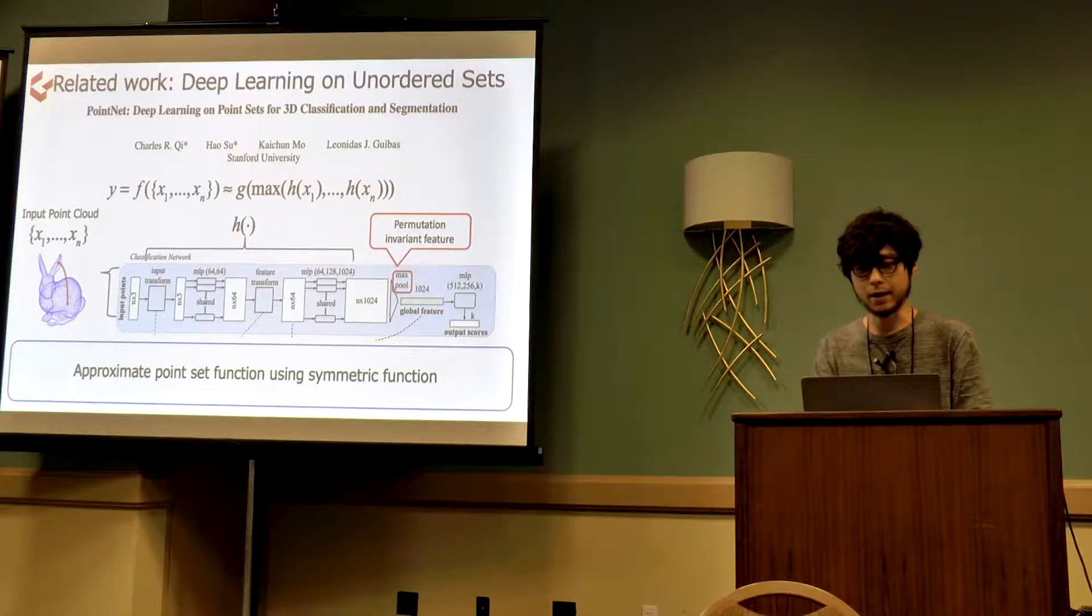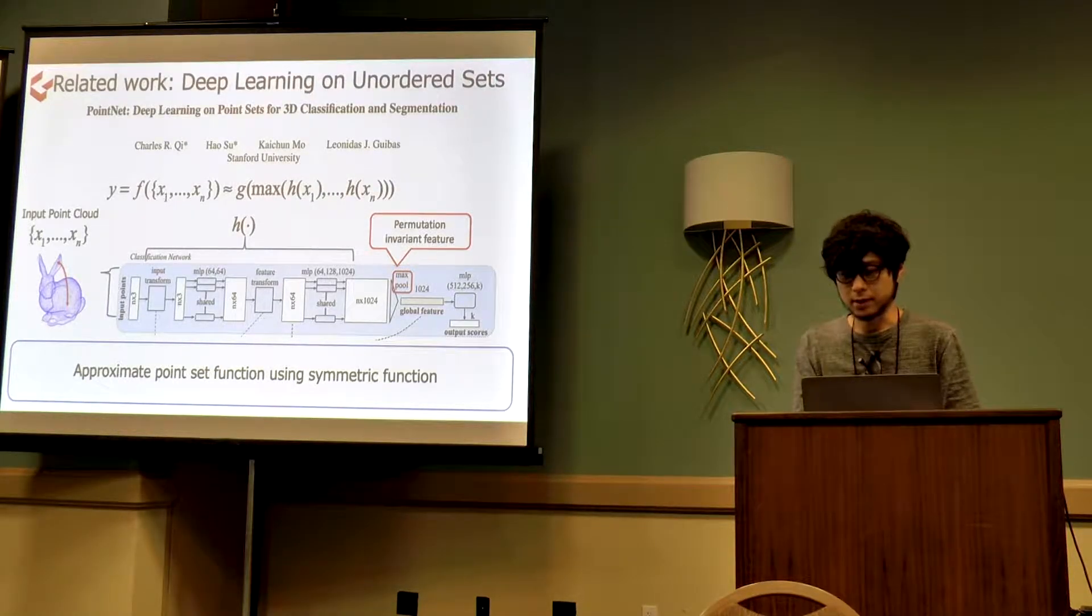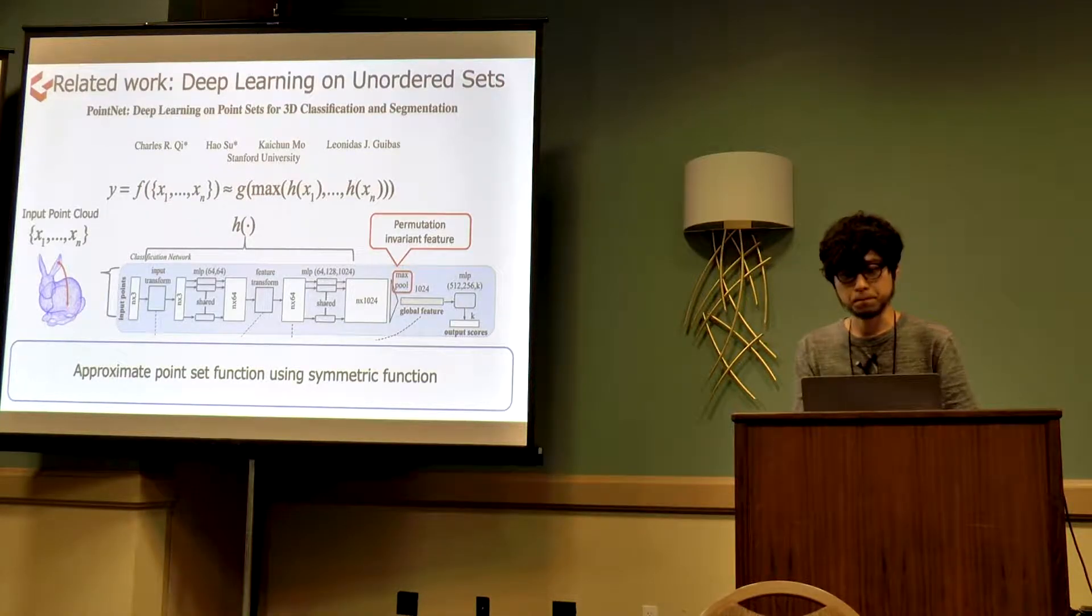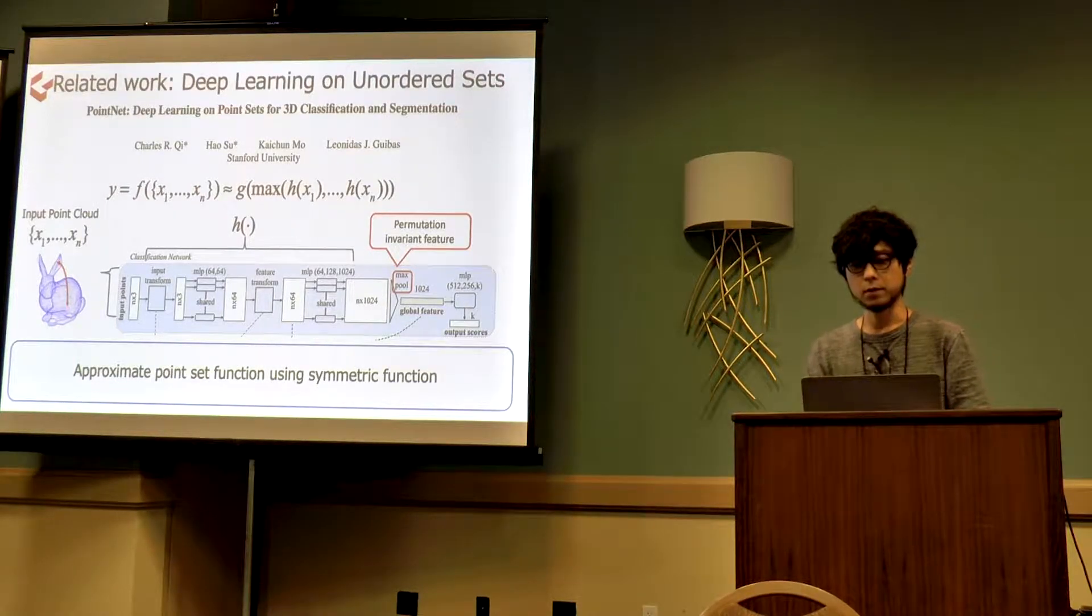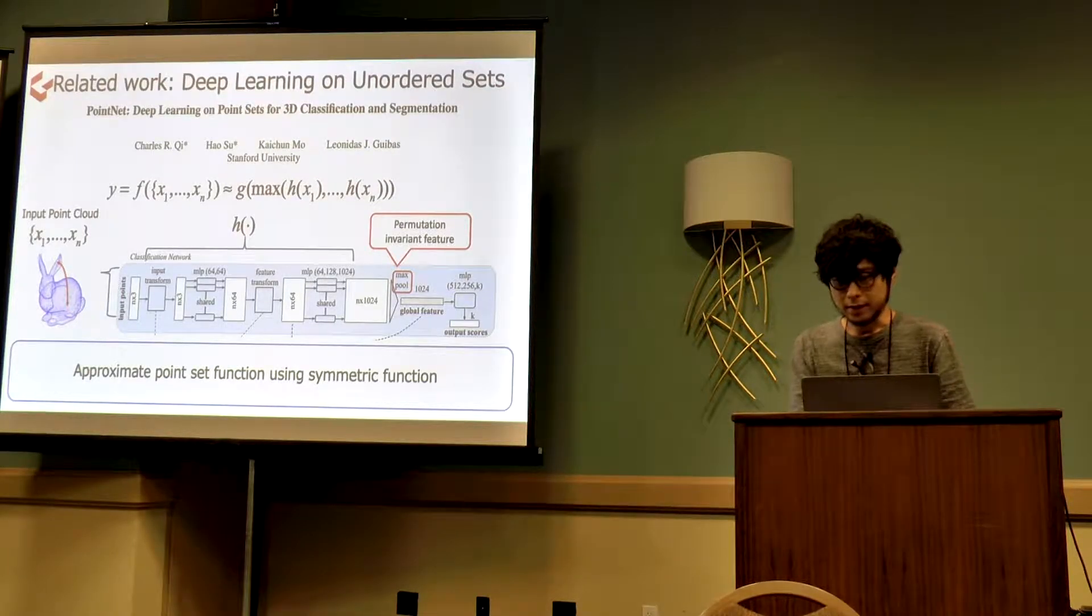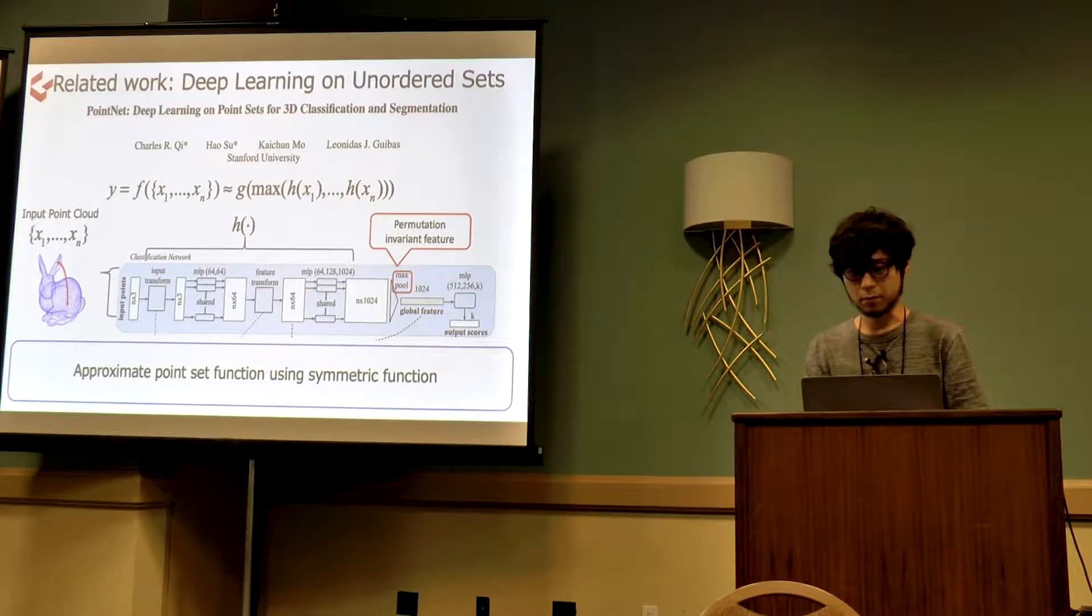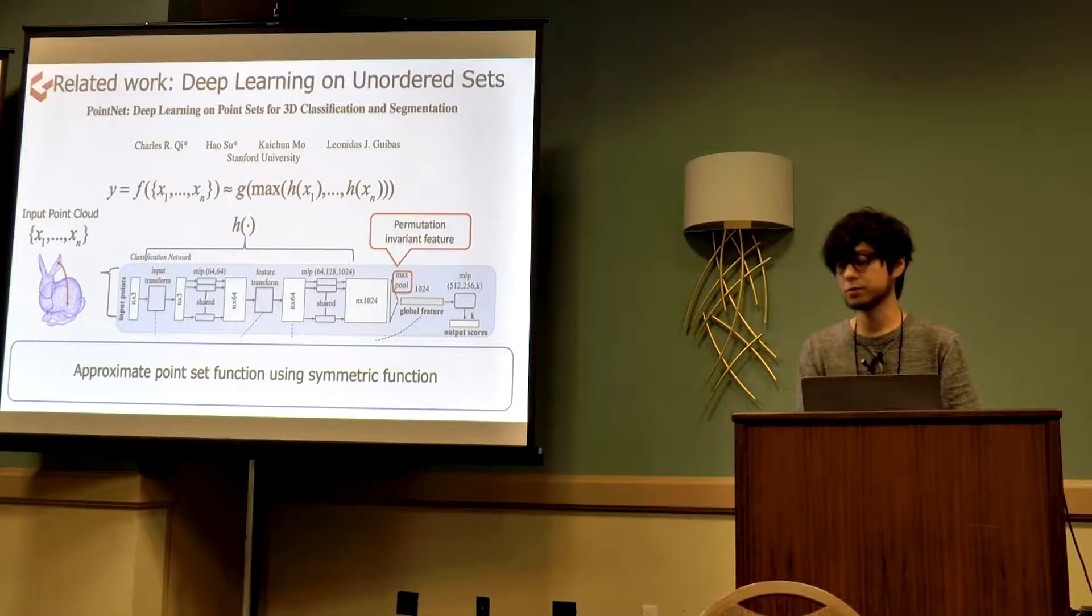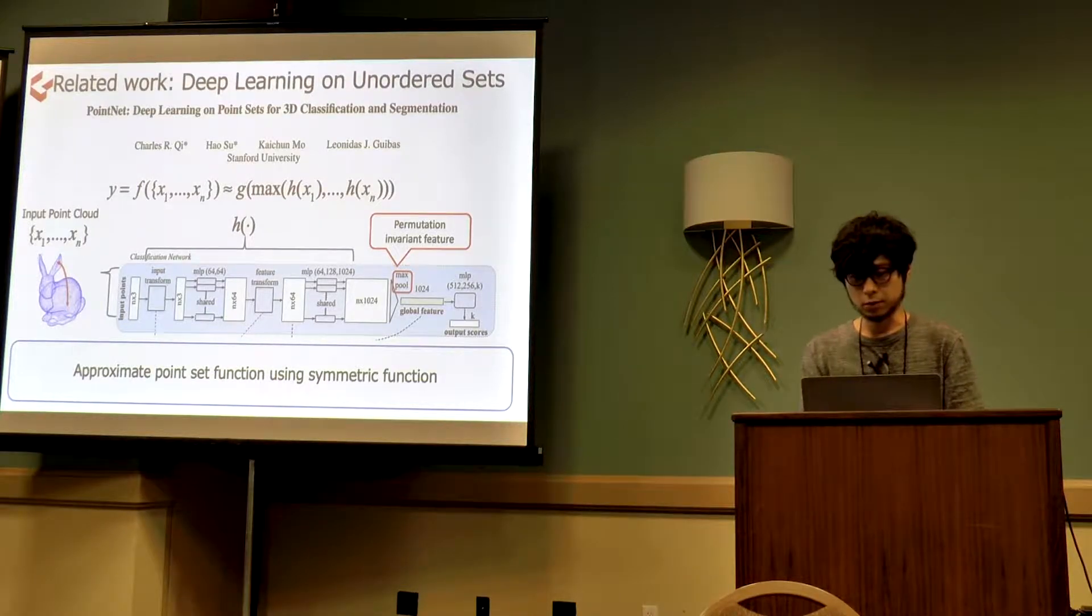Our work is inspired by PointNet, which was designed to process set of point clouds directly without densification. To process point cloud data, permutation of input is a major problem. For example, given a 3D point cloud bunny, the network is expected to classify it as bunny even if the order of point clouds was changed. PointNet made the point set function using symmetric functions such as max, making it invariant to permutation of input point cloud.